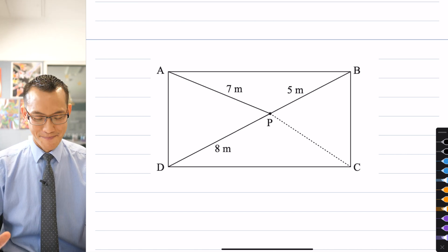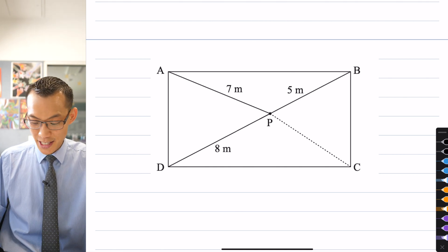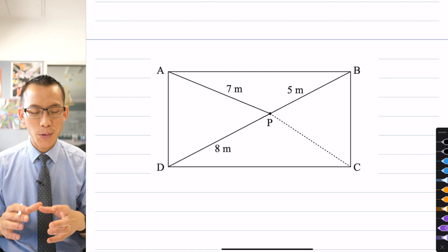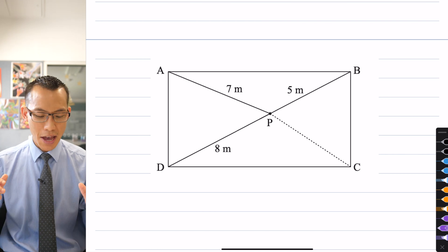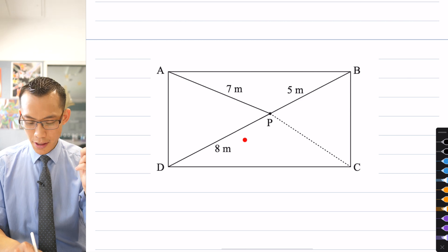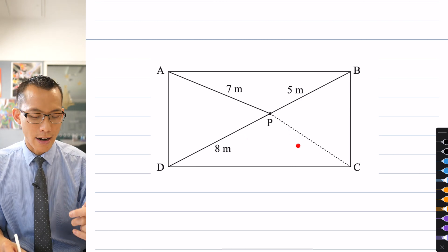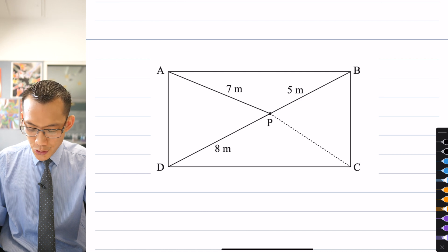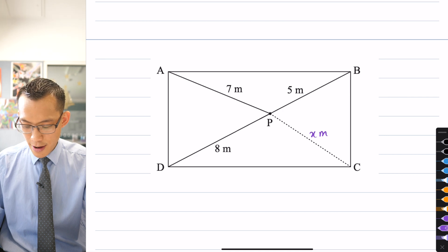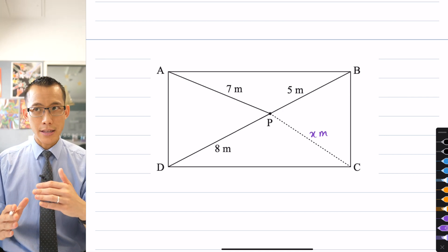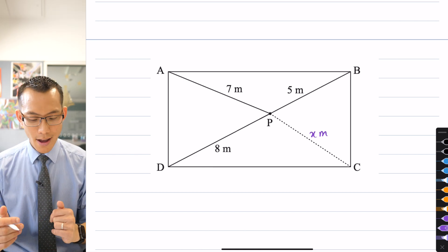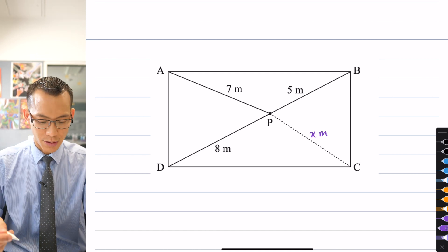Well, if you've paused the video and had a go yourself, I'm about to spoil it, so get ready. To solve this problem, what I'm going to create is a series of right-angled triangles that are going to allow me to relate the 7 and the 5 and the 8 with each other, and with the unknown length that I'm after. That creates all those right-angled triangles that I was after.